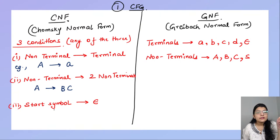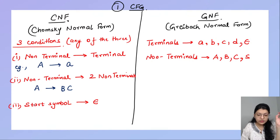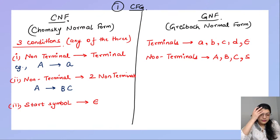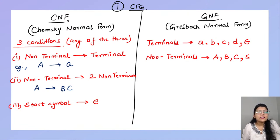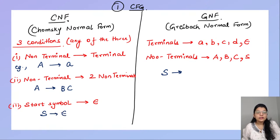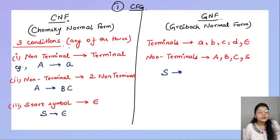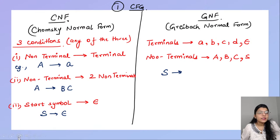The third condition for CNF: the start symbol of the grammar gives a null production. So only the start symbol must give a null production. For example, S → ε (null string). These are your three conditions for Chomsky Normal Form. Any grammar that has to be in CNF should be of this type.